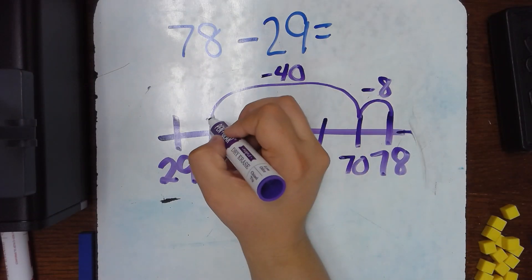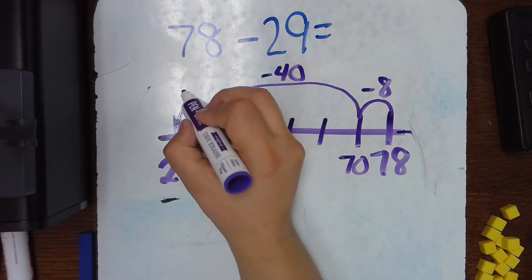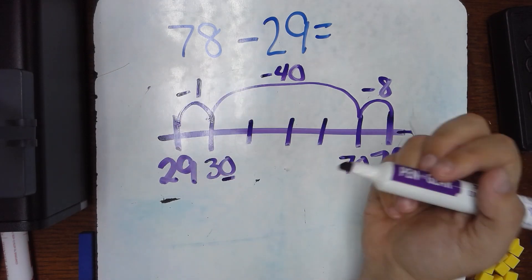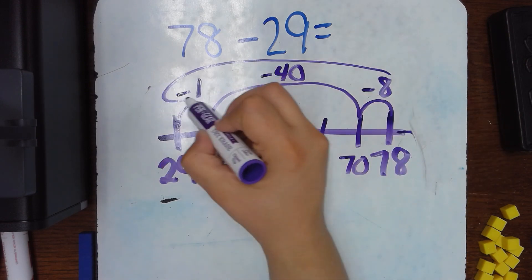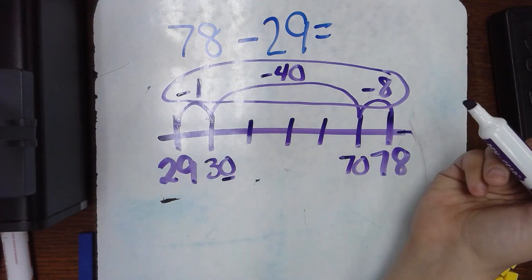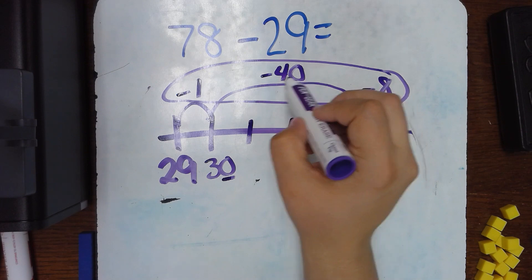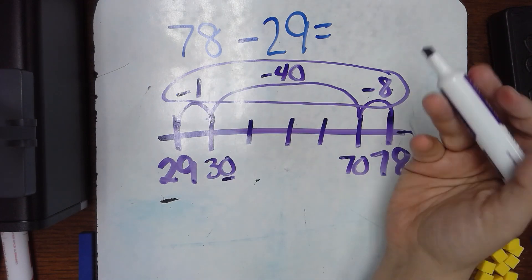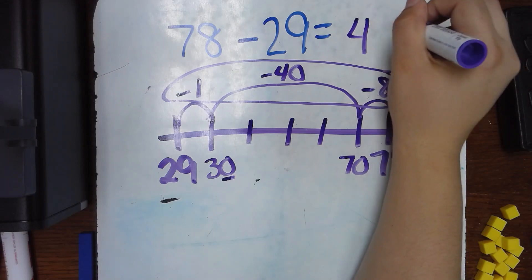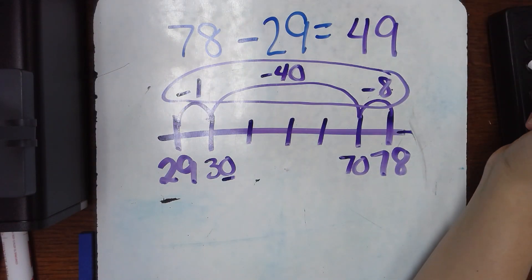We don't want to waste time by writing every single number in between. Then what we do is from 30 to 29, that's minus 1. The answer to this problem, I'm going to find it by adding up these numbers. So 40 plus 1 is 41 plus 8 more. That's 9, 49. Each time I should be getting the same answer.